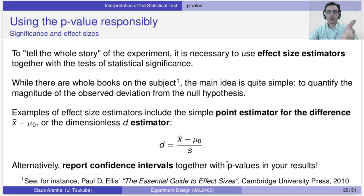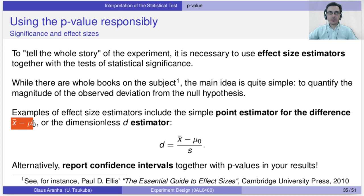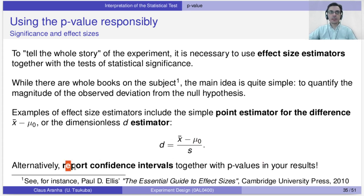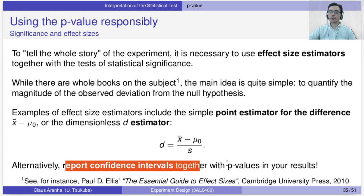There's a reference below — an essential guide to effect sizes. The general idea is simple: always report the size of the effect together with the p-value. For example, calculate the difference between the sample average and the null hypothesis mean, or use the d estimator: the difference between the sample mean and the null hypothesis mean divided by the error. Also, always report the confidence interval alongside the p-value, as together they give a better picture of the actual difference size.